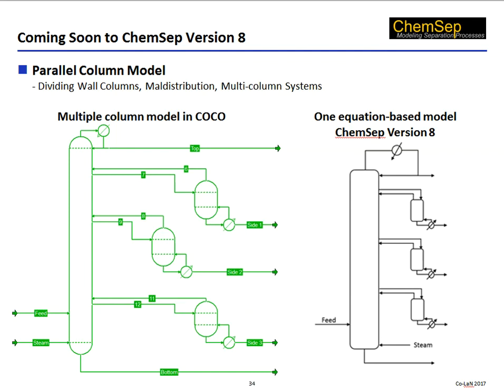Finally, we introduced the ChemSat Parallel Column Model. We have used it to model dividing wall columns of many different configurations, to model maldistribution in packed columns, and to model multi-column systems such as the one shown in COCO. The ChemSat equivalent is a single, equation-based model — much easier to converge than a multi-column model. This concludes the presentation. Since neither Harry nor I can be present, we are not able to easily answer questions at this time. However, if you have questions, please send them to us by email and we would be more than happy to answer them. Thank you for listening.